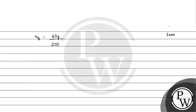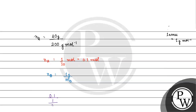So the number of moles of A comes out to be 20 grams divided by 200 grams per mole, which equals 1/10 moles, or 0.1 moles. Now, N_B will be mass of B divided by molecular mass of B. The ratio N_A to N_B is equal to 9, so 0.1 divided by (1 divided by molecular mass of B) equals 9. Therefore, 0.1 times molecular mass of B equals 9.